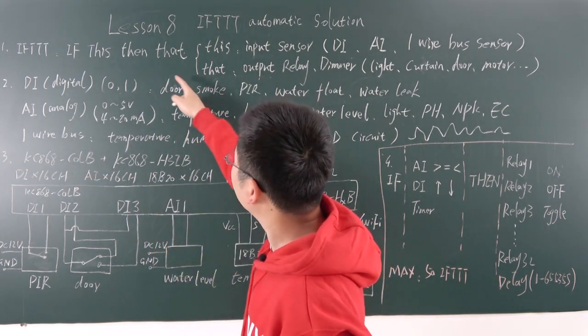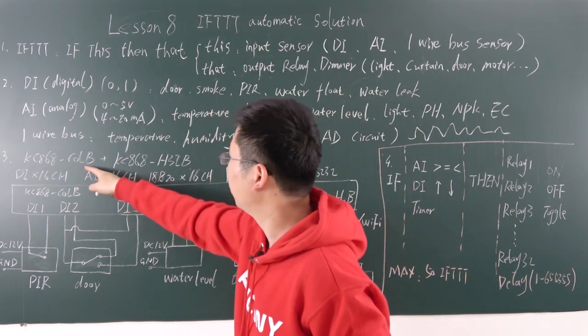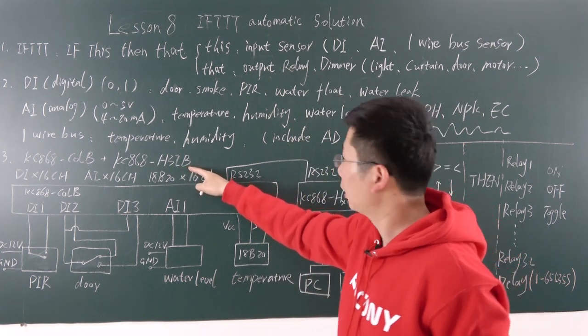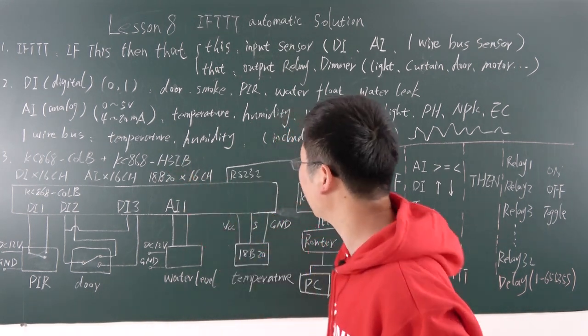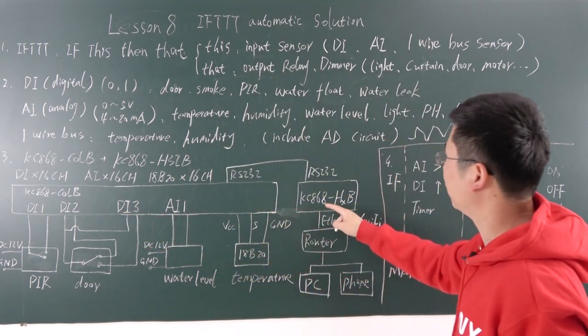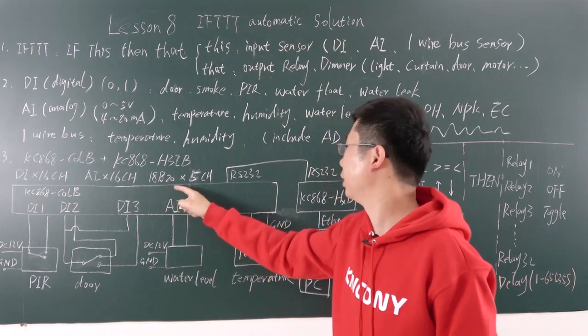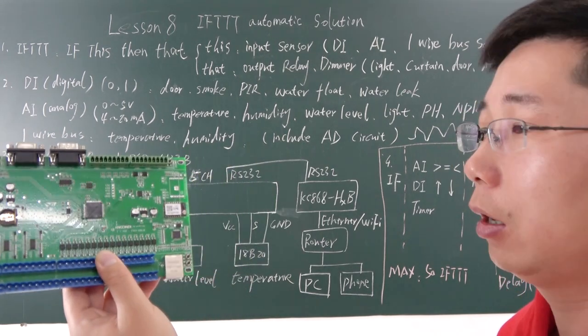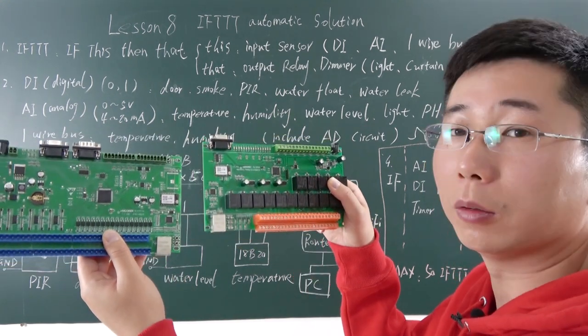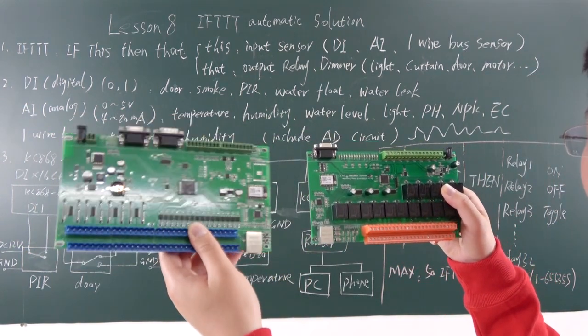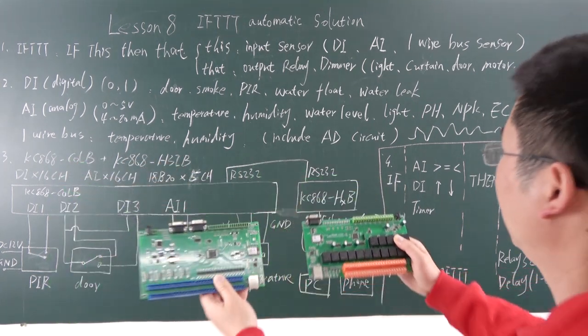We will look at how to read this input sensor data and to control the relay output. So we use the CULB logic controller, and this is H32B relay controller. But also you can choose any other channels of the relay board, not only H32B. You can see this is the CULB and this is the relay board. The CULB has 16 channel digital input, 16 channel analog input, and this has five temperature sensors.